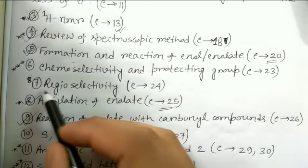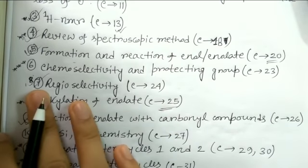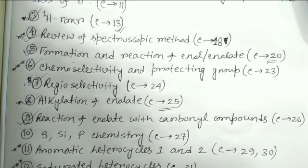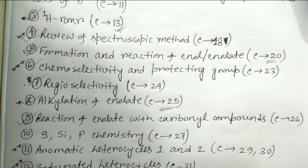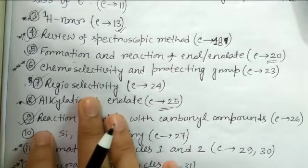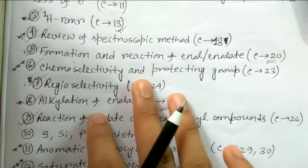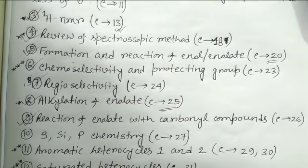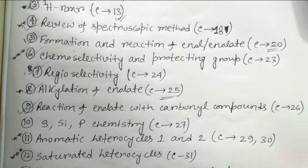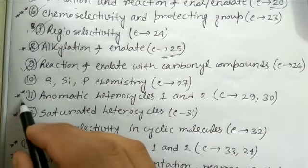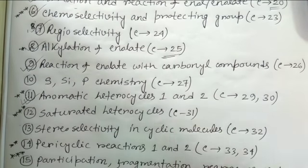Regioselectivity, chemoselectivity, and protecting groups are very nicely and separately covered in Clayden - chapters 23 and 24. In many other books these topics are spread throughout, but here there are dedicated chapters on regioselectivity and chemoselectivity, so you get all the ideas in a compact way. This makes it very important reading.